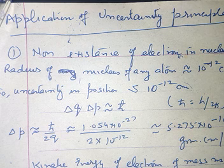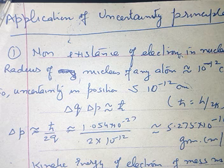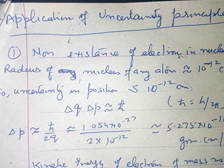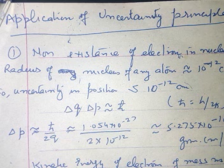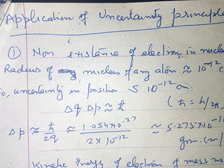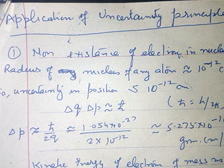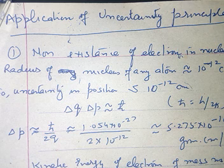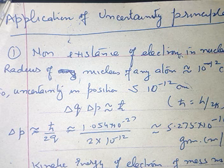Moreover, new mechanics gives us the laws of probability, and hence probability takes the place of certainty. According to new mechanics, the term particle is something made up of a very deep and essential unity of both the corpuscle and the wave, resulting in a certain unavoidable uncertainty. The principle of uncertainty explains a large number of facts which cannot be explained by classical ideas.